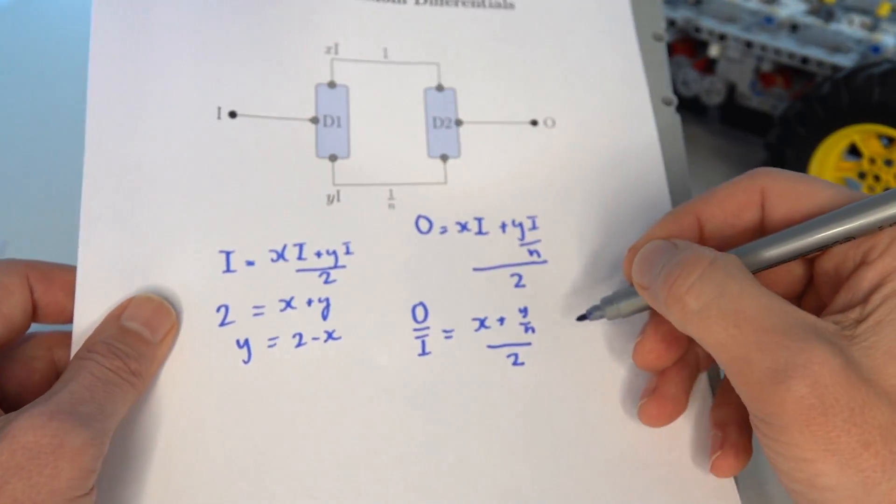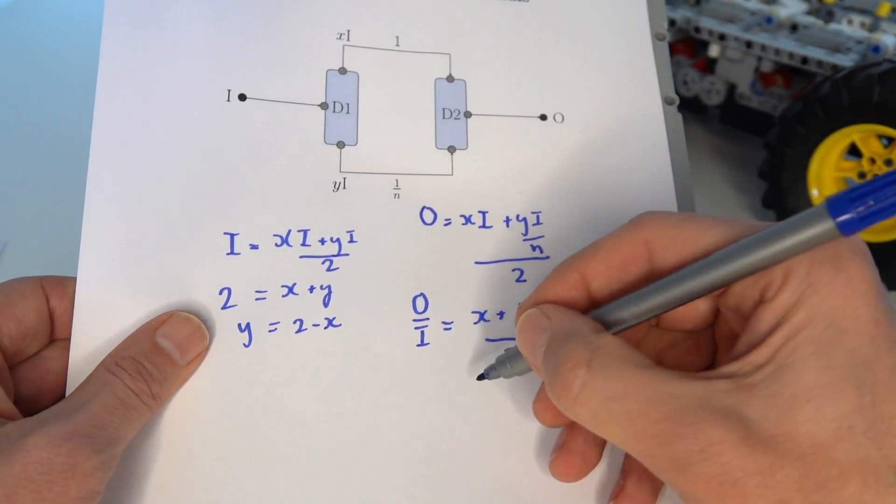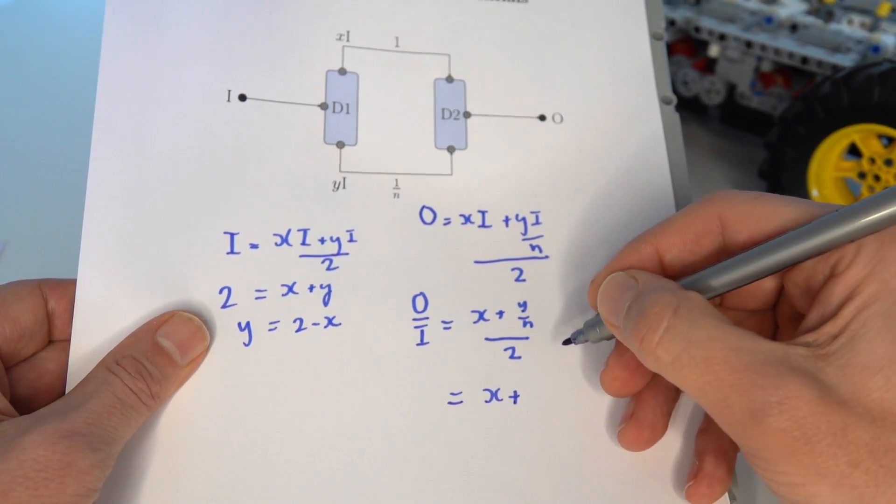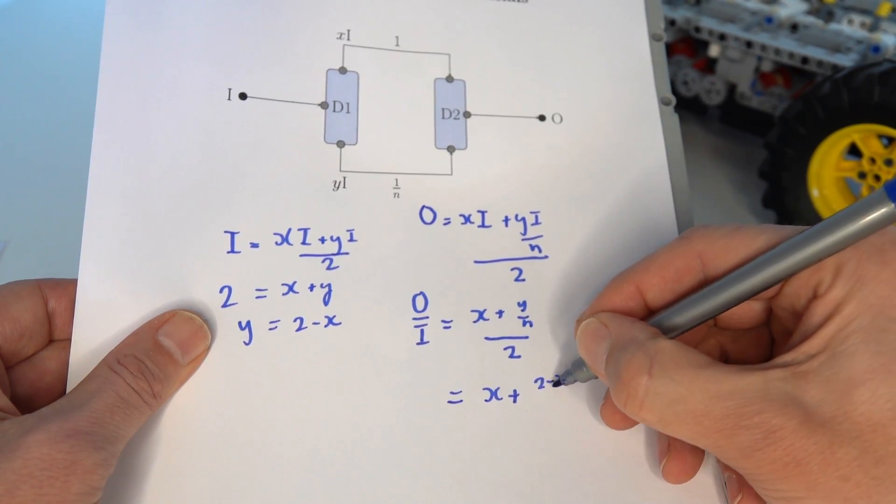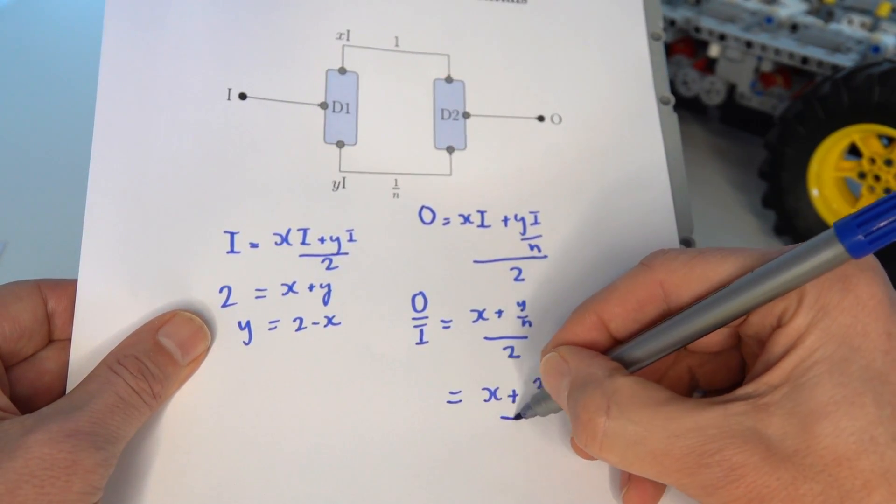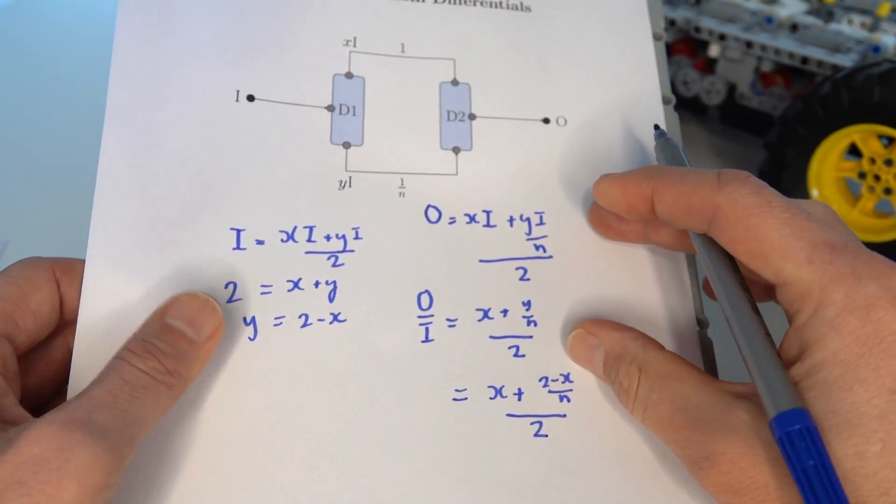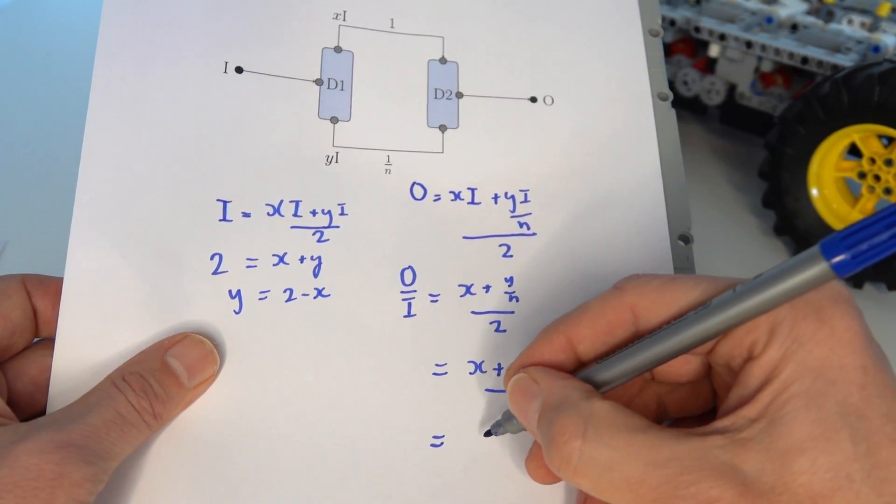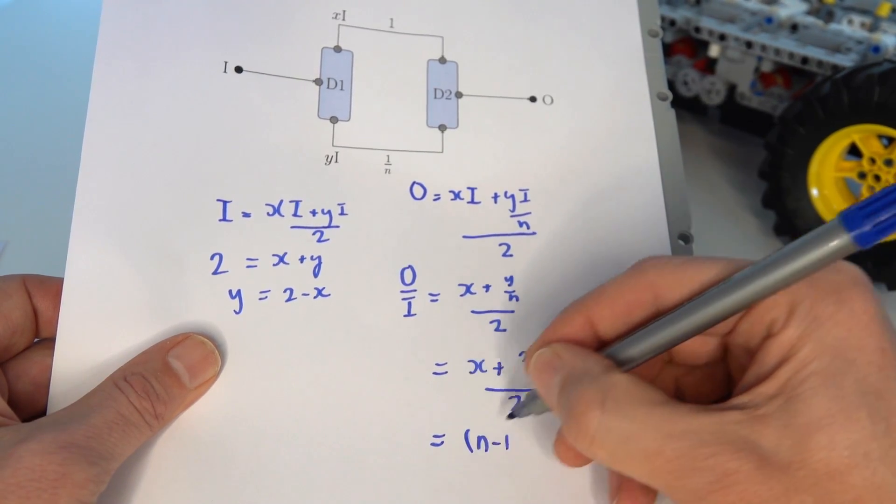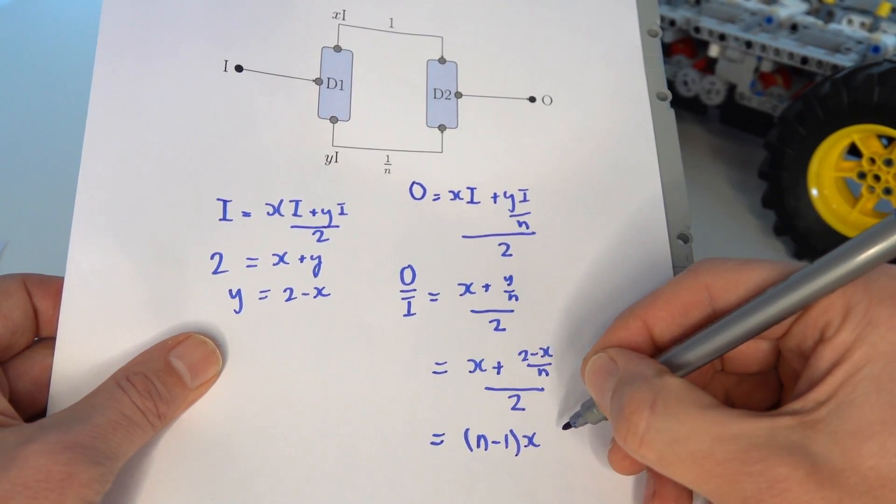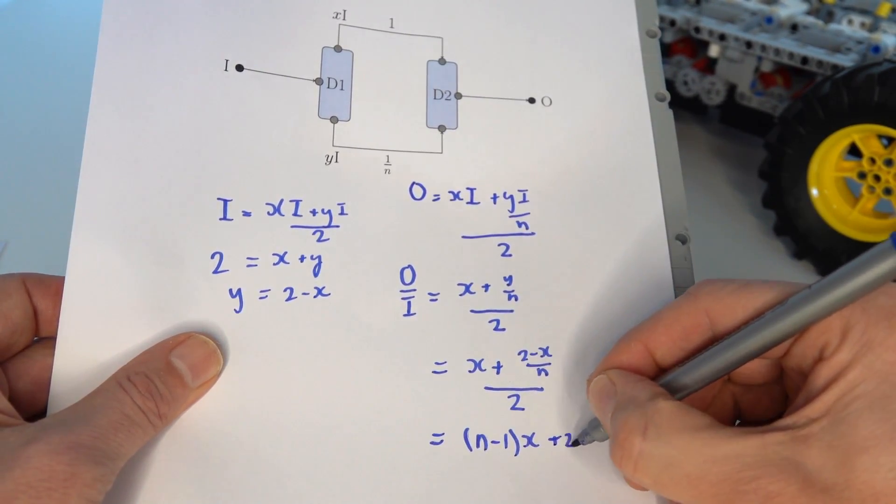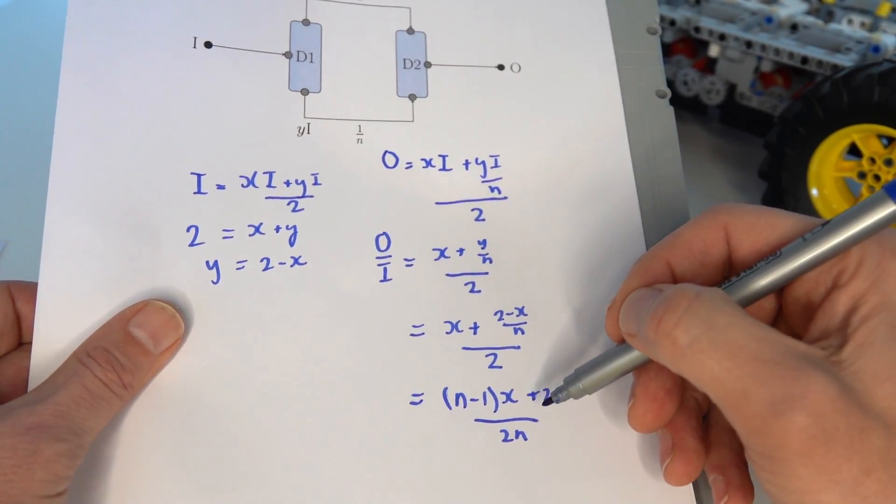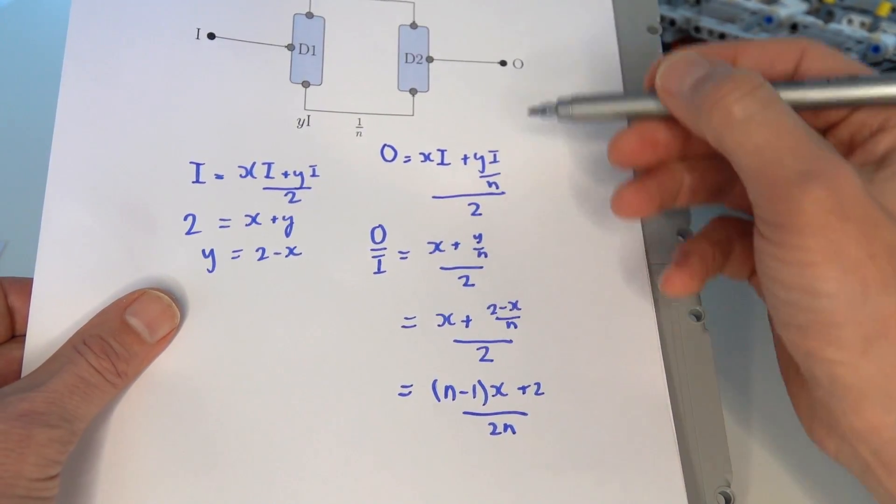Substituting that back into the equation for the output to input we can therefore write that x plus 2 take away x over n all divided by 2 which gives us that output to input ratio. We can simplify that further and we can rearrange it to write n minus 1 times x plus 2 divided by 2n. So that gives us our final equation for the output to input ratio for this diagram.